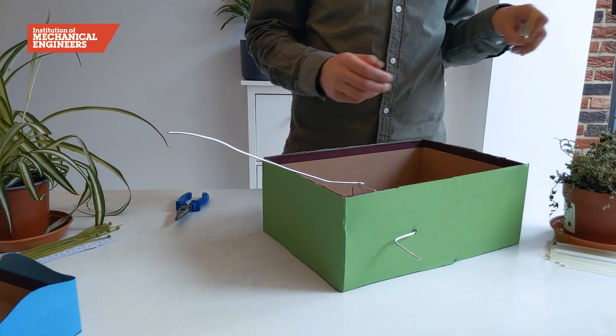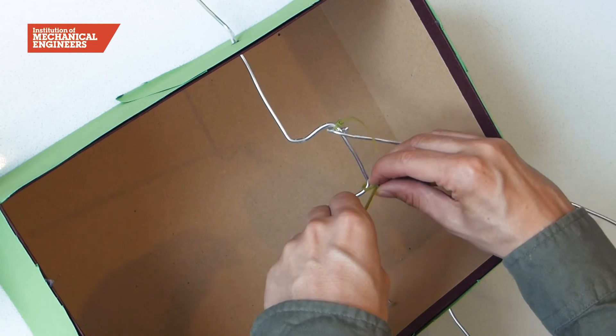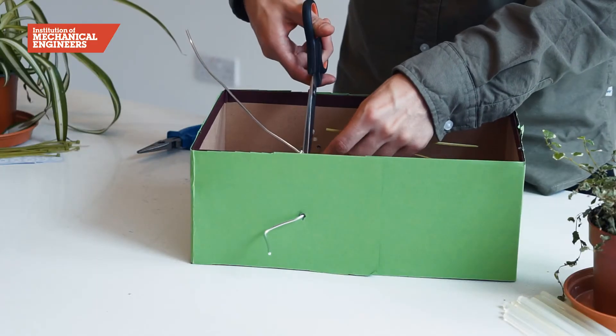We're now going to use zip ties to hold the connecting rod in place on the crank. Without these, the rod can easily slide out of place and get jammed.